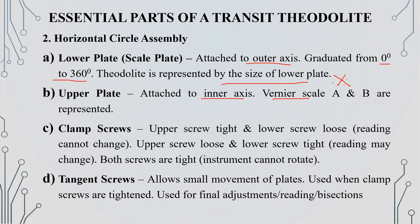The clamp screws are used to fix the instrument at a particular station. When we tighten the upper plate clamp screw, we do not change the readings. If we rotate the upper plate and tighten the upper plate, then we tighten the lower plate. The lower plate clamp screw, when tightened, fixes the readings at the same station.